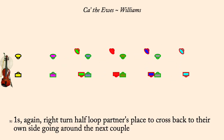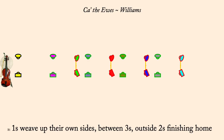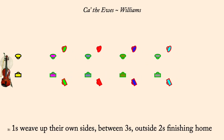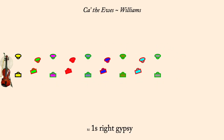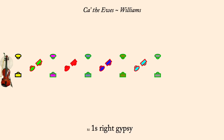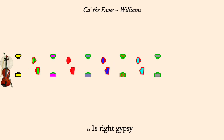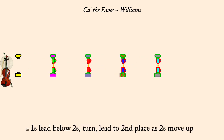One's weave up, inside threes, outside twos, to home. One's right gypsy. One's lead down and back to second place. Twos move up.